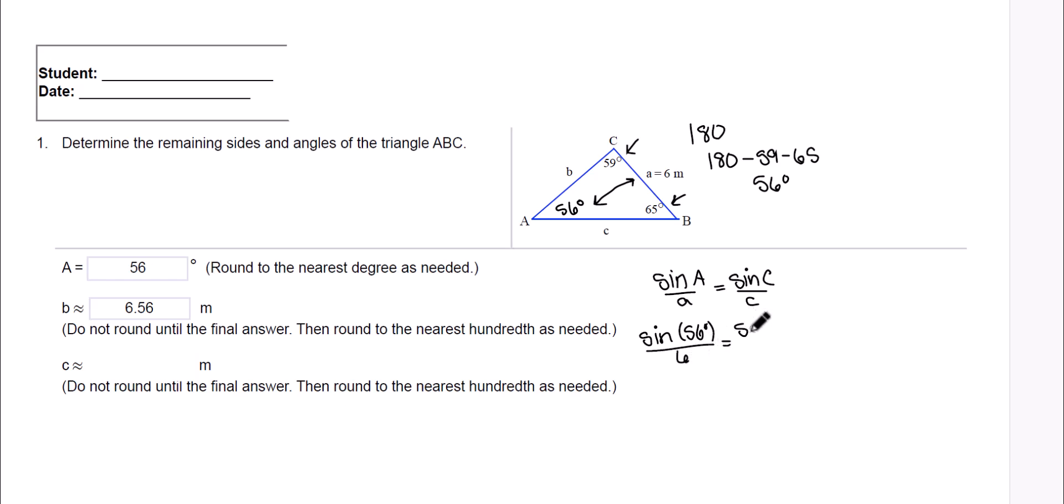The sine of C, well, C is 59 degrees, over side C. And guess what we're going to do? Yeah, we're going to cross multiply.